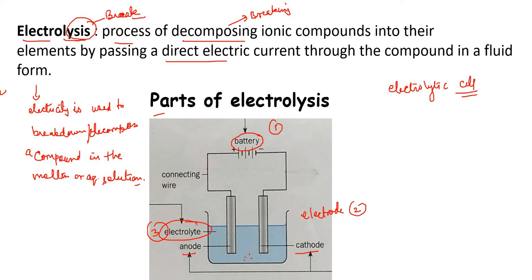The battery is used as a power source, and it acts as an electron pump. It draws electrons away from the anode. As electrons are drawn away from the anode, the anode becomes comparatively positively charged. The electrons taken from the anode enter the positive terminal of the battery and are pumped out of the negative terminal.